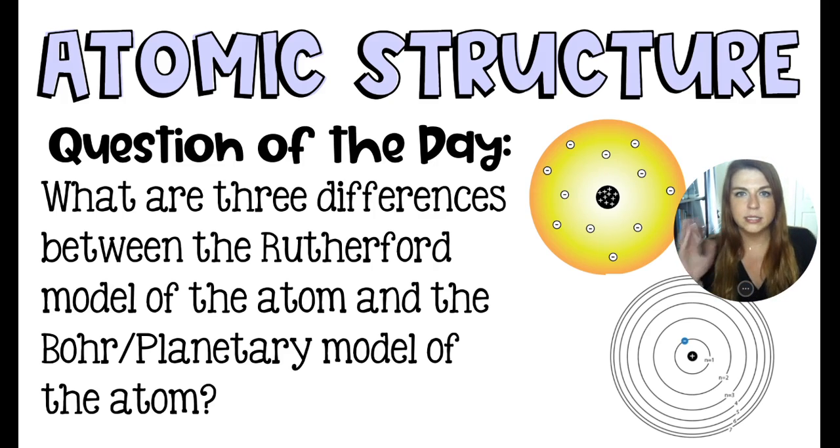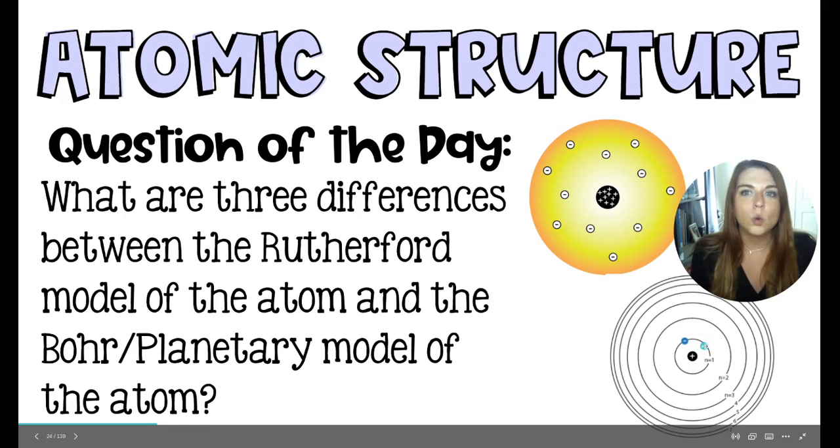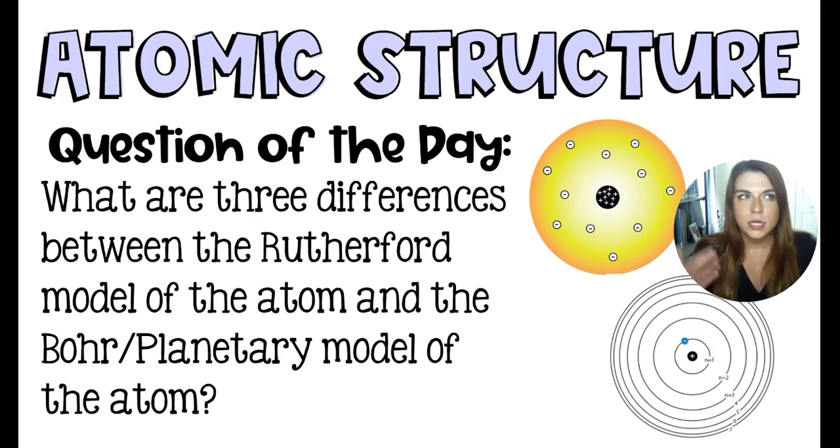Number two, those electrons seemingly rotate around the nucleus. And number three, Bohr actually spoke about some atomic behavior. He said that the electrons had a home in one of these energy levels or orbitals, but they could move around given proper energy.